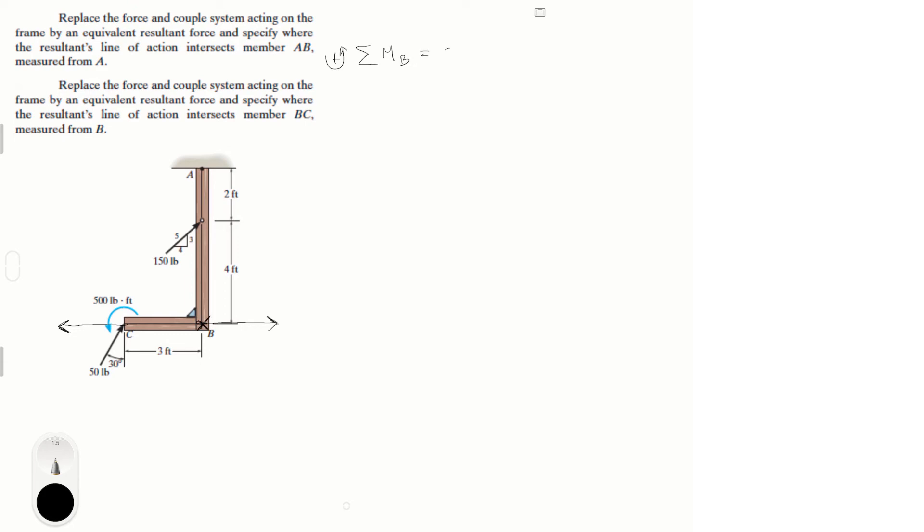500, don't forget to add this moment applied to the whole structure, minus 150 times 4 over 5 which is this x component of the force times the lever arm which is 4, and it's trying to turn it clockwise that's why it's negative. Minus 50 cosine of 30 times 3, and that is this force right here which is trying to turn it also clockwise. Notice that this x component is going straight to B so it doesn't generate no moment, and this y component is going away from B, so it's not generating any moment either.